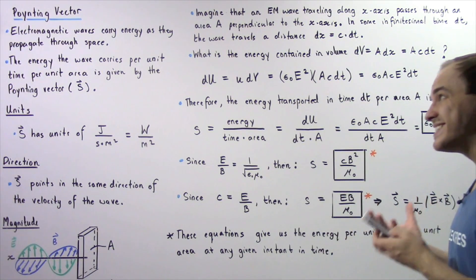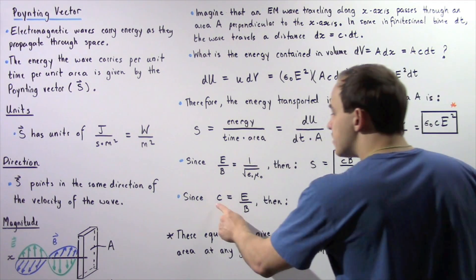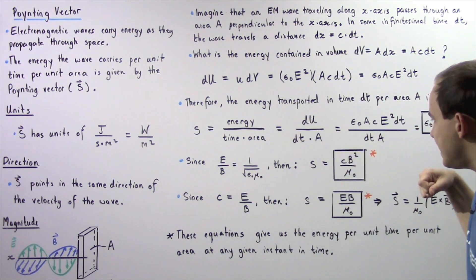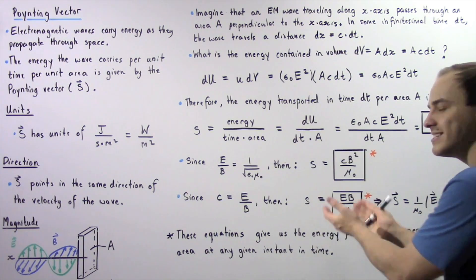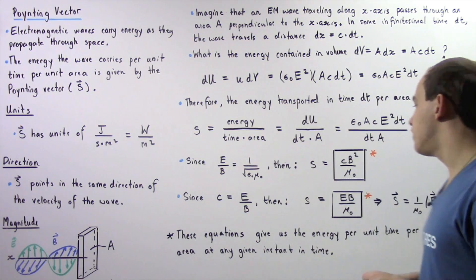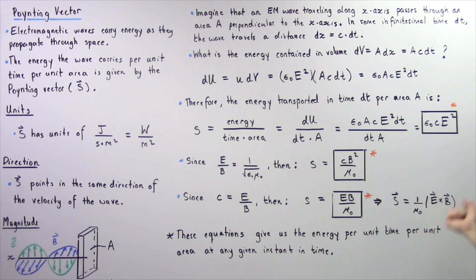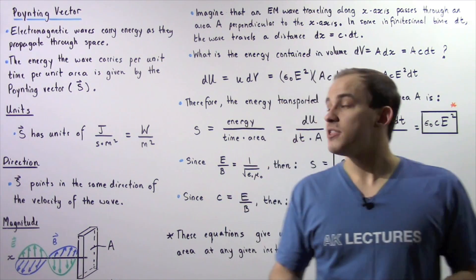Finally, we can express the magnitude of the Poynting vector in terms of both E and B. Since c equals E divided by B, substituting into the previous expression cancels one factor of B, leaving S equals E times B divided by mu naught. More generally, the Poynting vector is S equals 1 over mu naught times the cross product of E and B. These three equations all give the energy per unit time per unit area at any given instant. In the next lecture, we will discuss the average value of the Poynting vector.